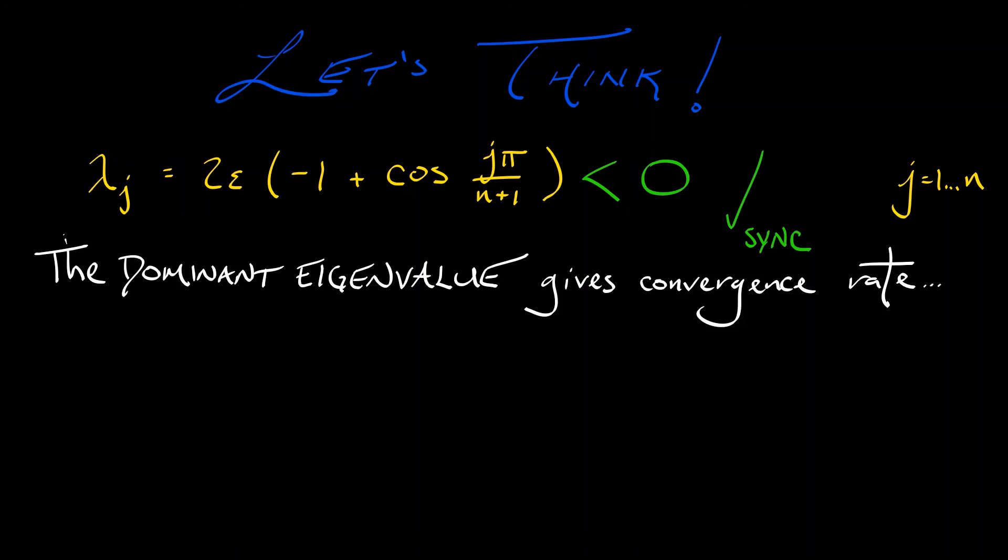Convenient notation. That lambda 1 is equal to 2 epsilon times negative 1 plus cosine of 1 times pi divided by n plus 1. I'm going to expand that out using the Taylor expansion for cosine, since for large values of n, this is kind of close to 0. And what am I going to get? I'm going to get 1 minus 1 half times quantity pi over n plus 1 squared plus 1 over 4 factorial times that stuff to the fourth. And then it keeps going.